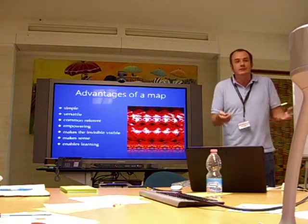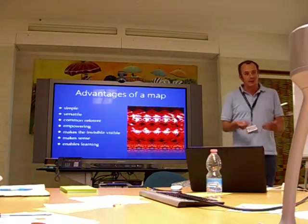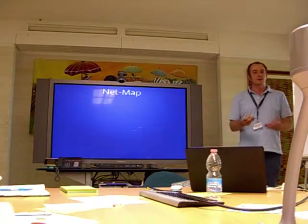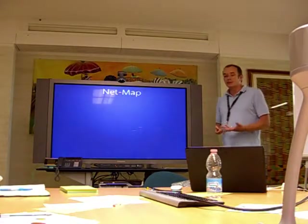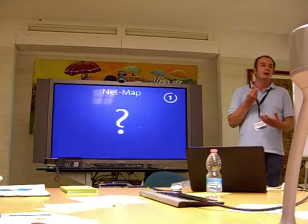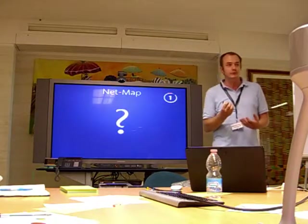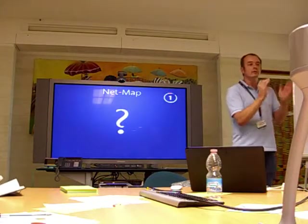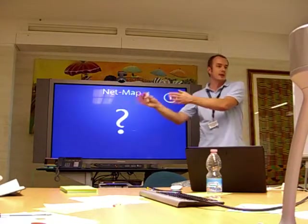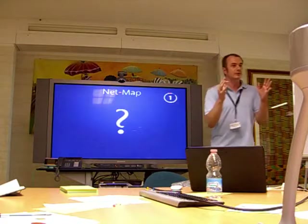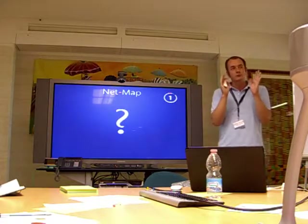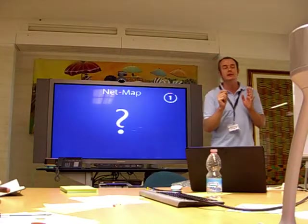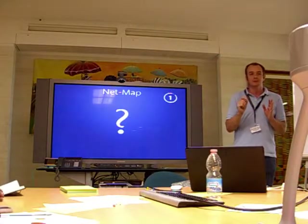How does this translate into the method? NetMap is trying to visualize what's going on in the social network. You do that by first identifying a core issue, a core question in the form of 'who influences this and that.' That's the core here. We have to look at the influence button.